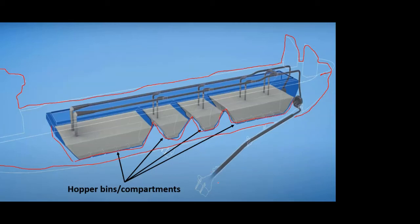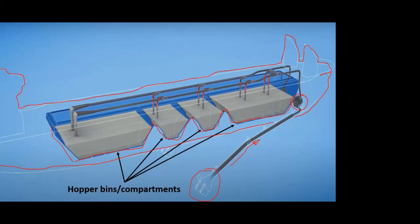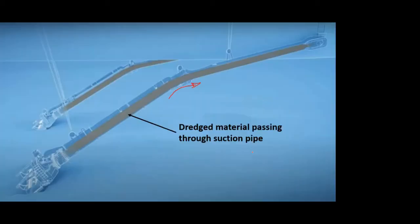This is what a hopper actually looks like. The red-highlighted outline is the actual ship, and inside that ship there are huge bins — these are the hopper bins. Here you can see the drag head, the suction pipe through which material comes up, and the motor which creates the vacuum effect. Pipes are laid in a linear fashion and at regular intervals the outlets of the pipes feed into the different hopper bins.